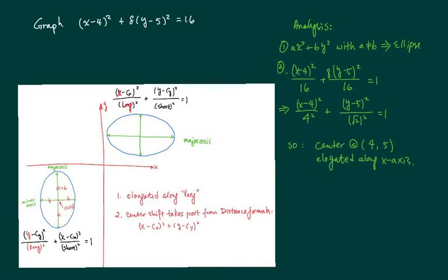So in our case once we convert it we can see x minus cx that's 4, y minus cy that's 5. So center is at (4, 5). It's elongated along x axis because this one is bigger than this one. Let's write up the solution.